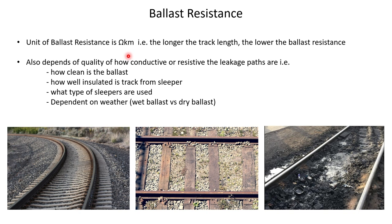There are many factors that determine how good or poor the ballast resistance is. How clean is the ballast — more contaminants mean more leakage paths. How well is the track insulated from the sleeper — without proper insulation the sleeper becomes a leakage path. The type of sleepers used also matters, as does the weather — whether it's a wet or dry weather area.